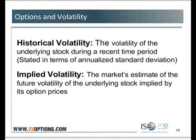Implied volatility is stated in an apples-to-apples comparison with historical volatility — the annualized standard deviation. While historical volatility looks backwards in time at the actual price changes, implied volatility looks forward in time at what the market expects the future price changes to be.